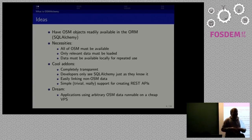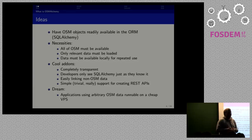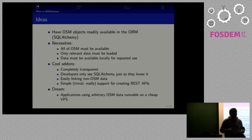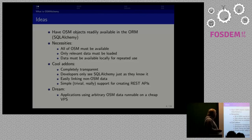So let's say the application is querying for any object tagged shop equals bakery somewhere in a bounding box — they just make an SQL query, and then OSM Alchemy kicks in and says 'oh, I don't have this data available, I'll get it from OpenStreetMap and place it in the database.' But this is all completely transparent for the developer.